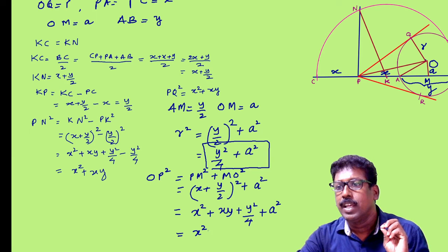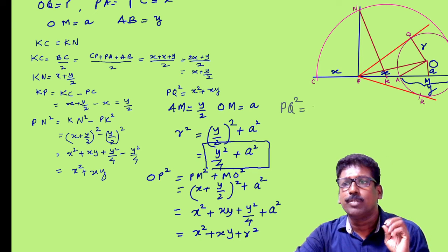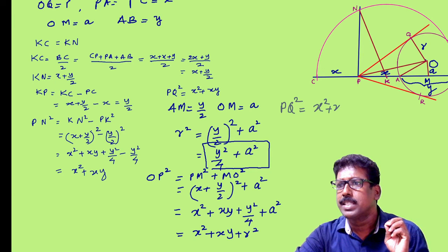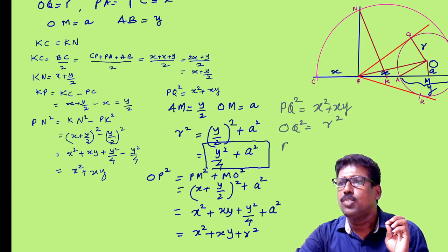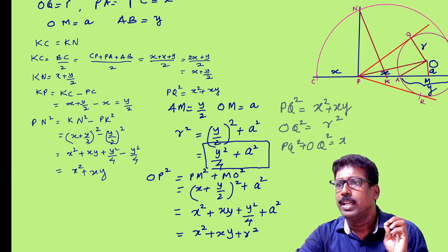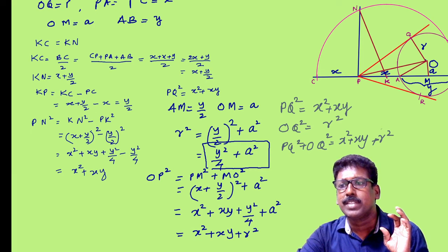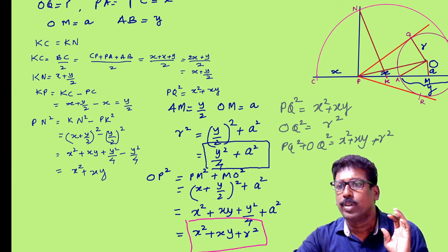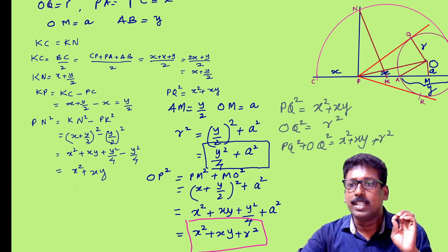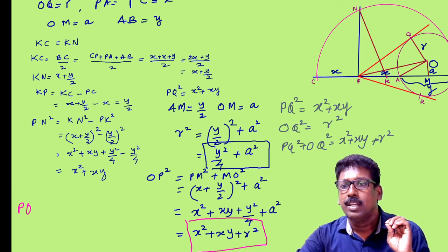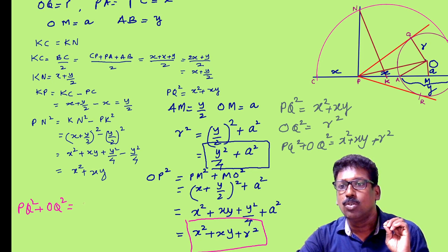So OP² = X² + XY + R². You know PQ² = X² + XY, and OQ² = R². Then PQ² + OQ² = X² + XY + R², which is equal to OP². So PQ² + OQ² = OP².